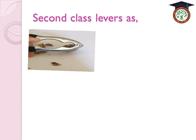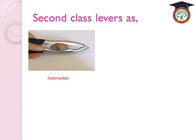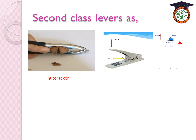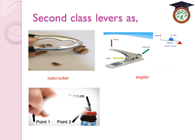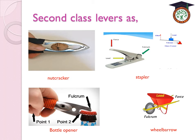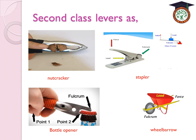Examples of second-class levers include the nutcracker — the nut itself is the resistance force, which lies between the effort force (your hand) and the fixed point (fulcrum). Other examples are some types of staplers, the bottle opener, and the wheelbarrow. They are all second-class levers because the resistance force is between the effort force and the fulcrum.